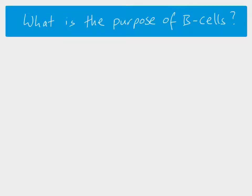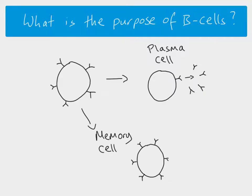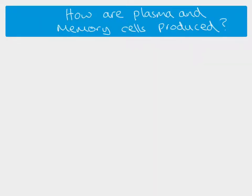The purpose of B cells is twofold. Once a B cell has matured it could either become a plasma cell — and plasma cells release antibodies — or it could become a memory cell. Memory cells stay in the body for a long time and help with our long-term immunity. So those are the two things B cells can do: produce antibodies or become memory cells.